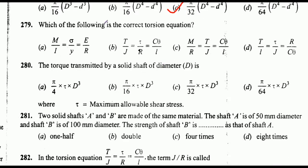Which of the following is the correct torsion equation? The correct answer is option B: T/J = τ/r = Cθ/l. The torque transmitted by a solid shaft of diameter D — where τ equals the maximum allowable shear stress — the correct answer is option B: (π/16) × τ × D³.